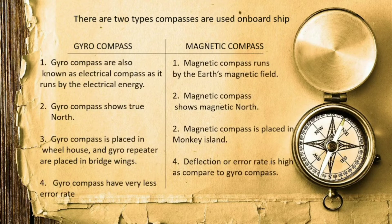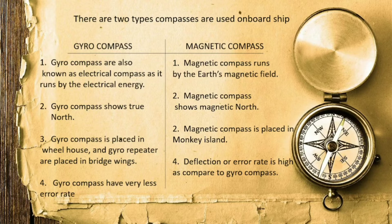What is the difference between gyro compass and magnetic compass? The first point is that gyro compass is also known as an electrical compass, as it runs on electrical energy — it requires a current source. In addition to that, the magnetic compass runs by the Earth's magnetic field. It does not need an extra source of energy.